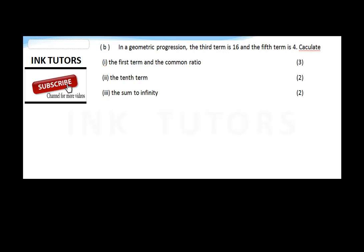The question says: In a geometric progression, the third term is 16 and the fifth term is 4. Calculate: (i) the first term and the common ratio, (ii) the tenth term, and (iii) the sum to infinity.